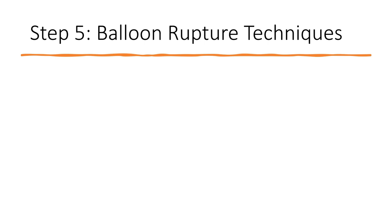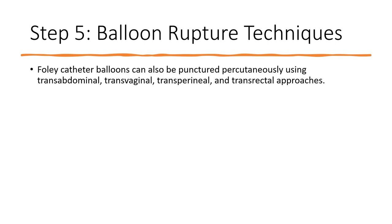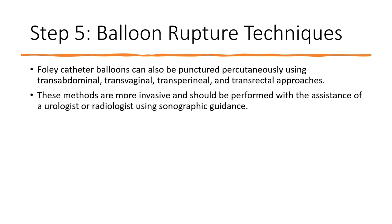Step 5: Balloon rupture techniques. Foley catheter balloons can also be punctured percutaneously using transabdominal, transvaginal, transperineal, and transrectal approaches. These methods are more invasive and should be performed with the assistance of a urologist or radiologist using sonographic guidance.